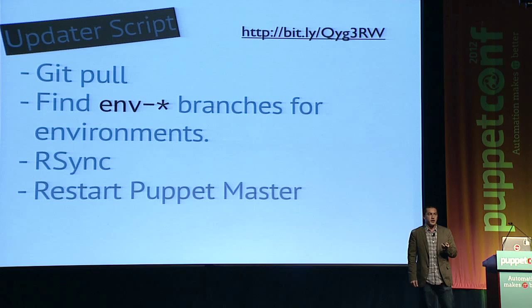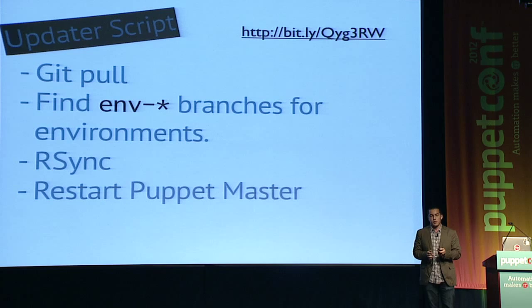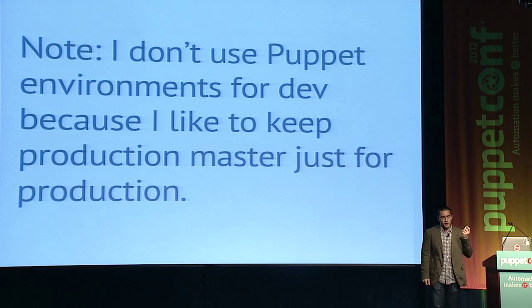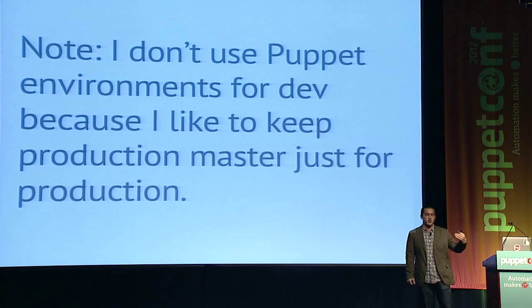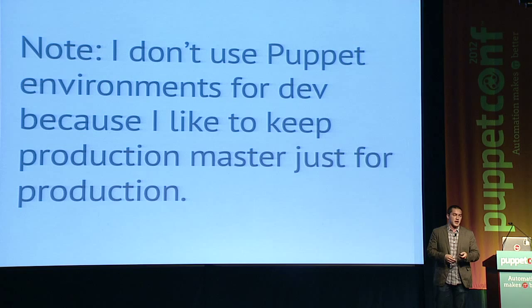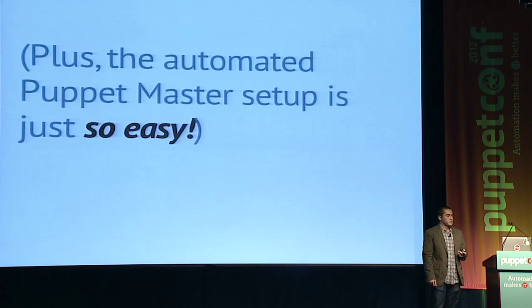The updater script is available at a bit.ly link. It does a git pull and uses special branch naming conventions for Puppet environments — branches starting with 'M-' get properly rsynced into the right locations for Puppet environments. We restart the master because we run into flaky issues with it not pulling in Ruby changes. I don't use Puppet environments for dev — I keep the production Puppet Master just for production with production and staging environments. Instead, for each developer or non-staging environment, we use a new Puppet Master each time, usually on a smaller instance, because the automated Puppet Master setup makes this easy.